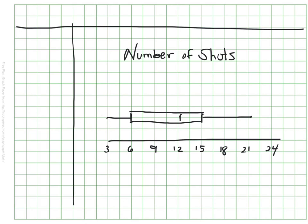Here's my box and whisker — the pen's a little tricky, but it still gives us all the important information. We know that 50% of the time the Timbers shot somewhere between 6 and 15 shots in a game. The median was just around 12, meaning half the time they had more than 12 shots and half the time fewer. We can also see the highest value was about 21 shots and the lowest was just 3 shots.